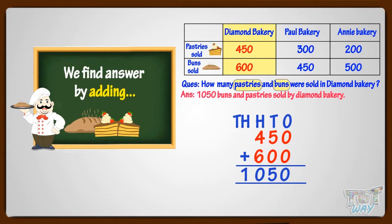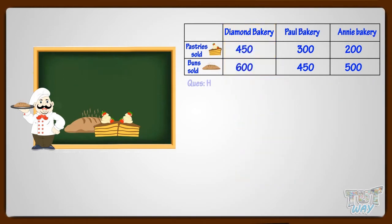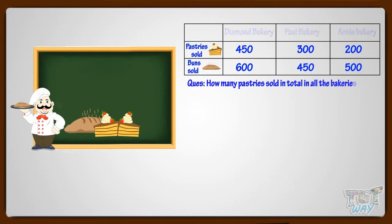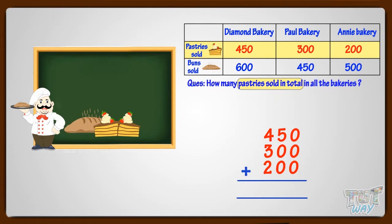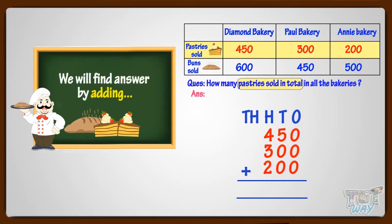Now let's answer the next question: How many pastries were sold in total in all the bakeries? Add up all the pastries sold from all the bakeries. First of all, write all the numbers in order to add them — write each numeral below the mark of its place value. Adding all the numbers, we got 950. So, 950 pastries were sold in total in all bakeries.